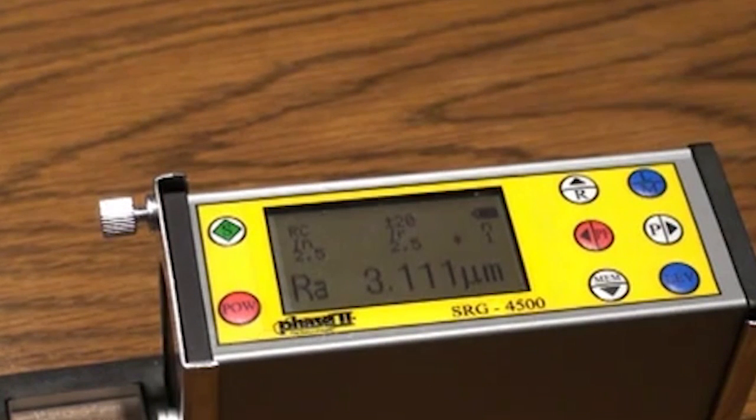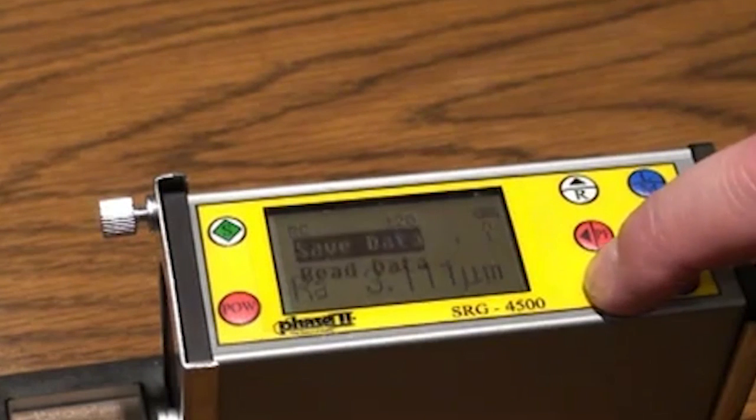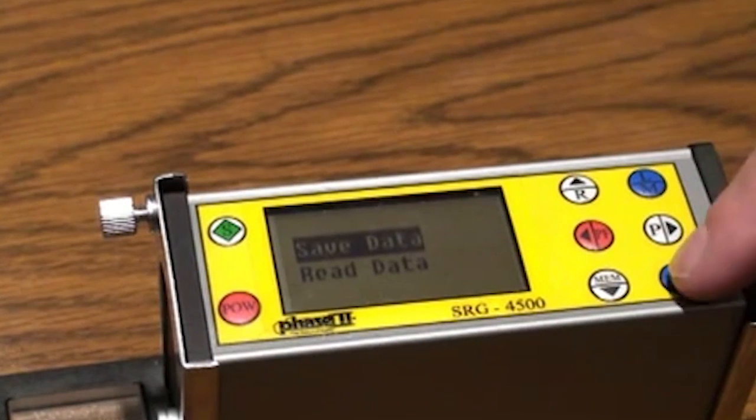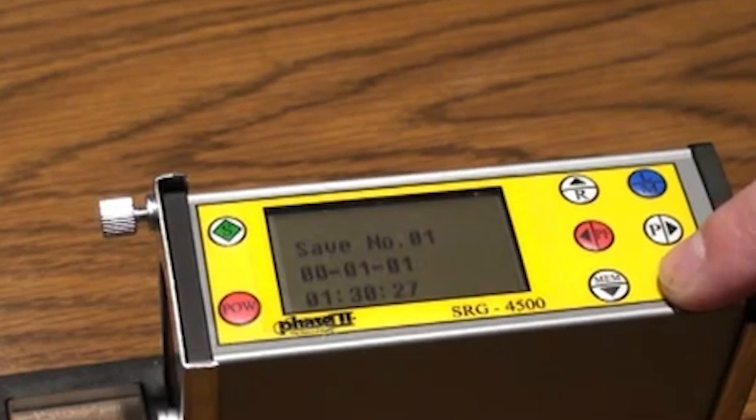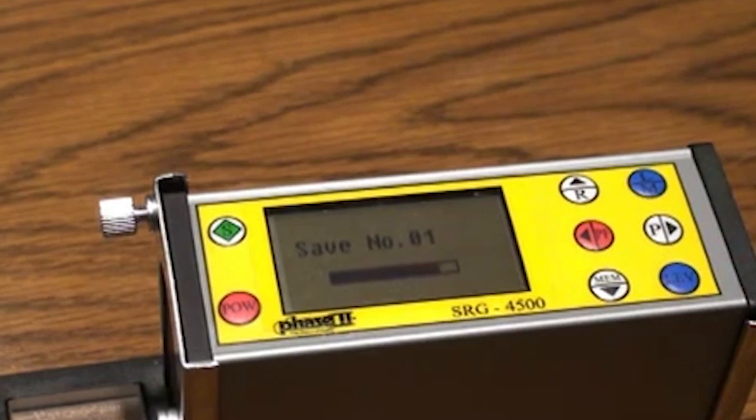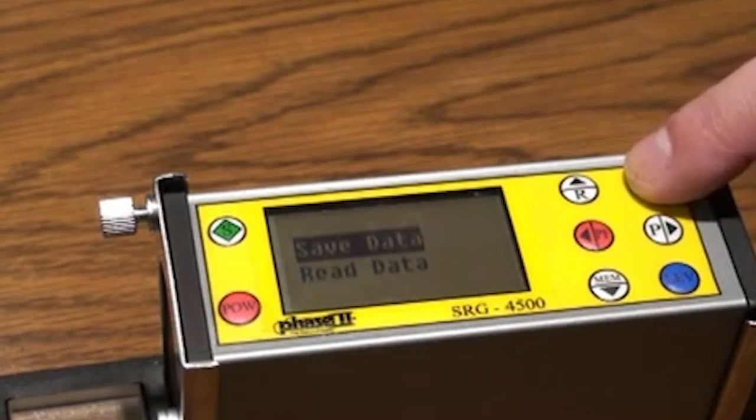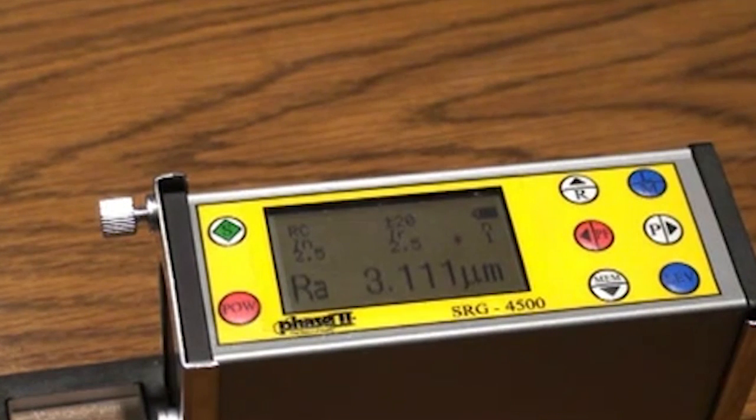To save data after taking a test, press the memory button. While save is highlighted, press the level button twice to save. To exit, press the LM button, taking you back to the main measuring screen.